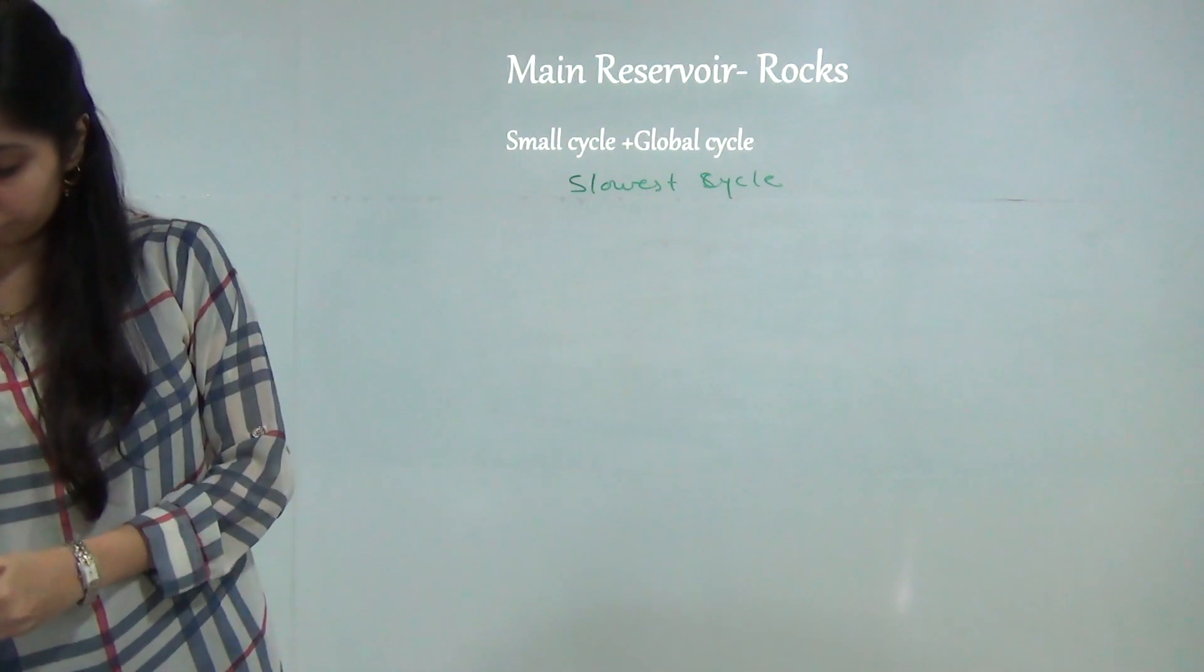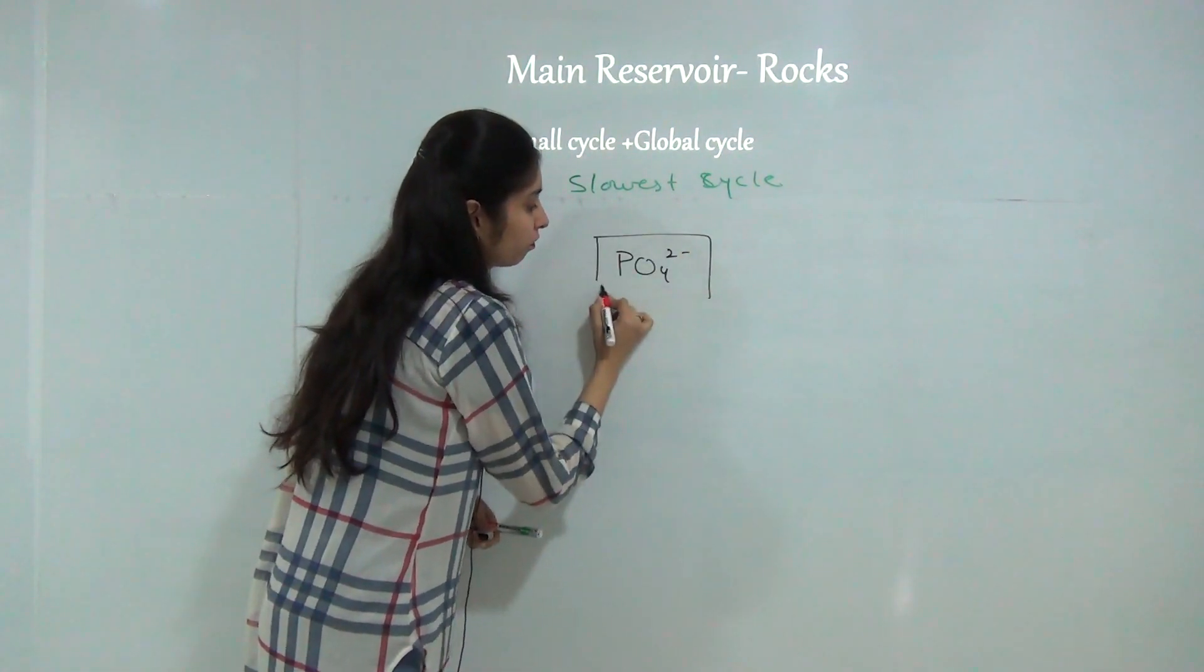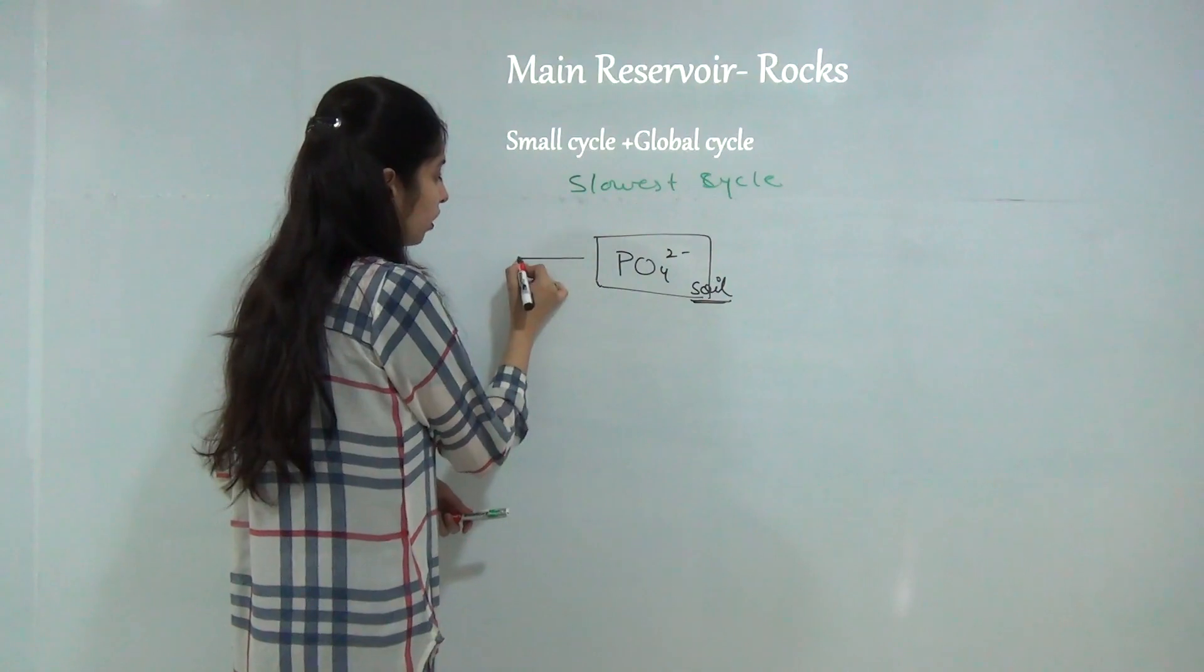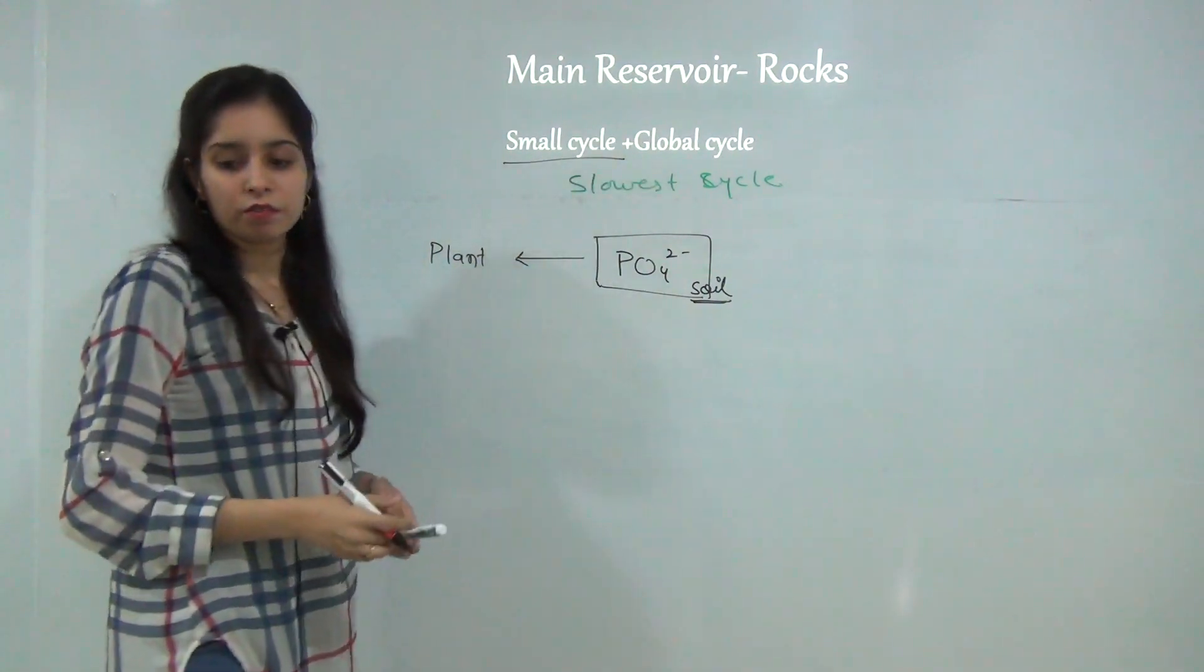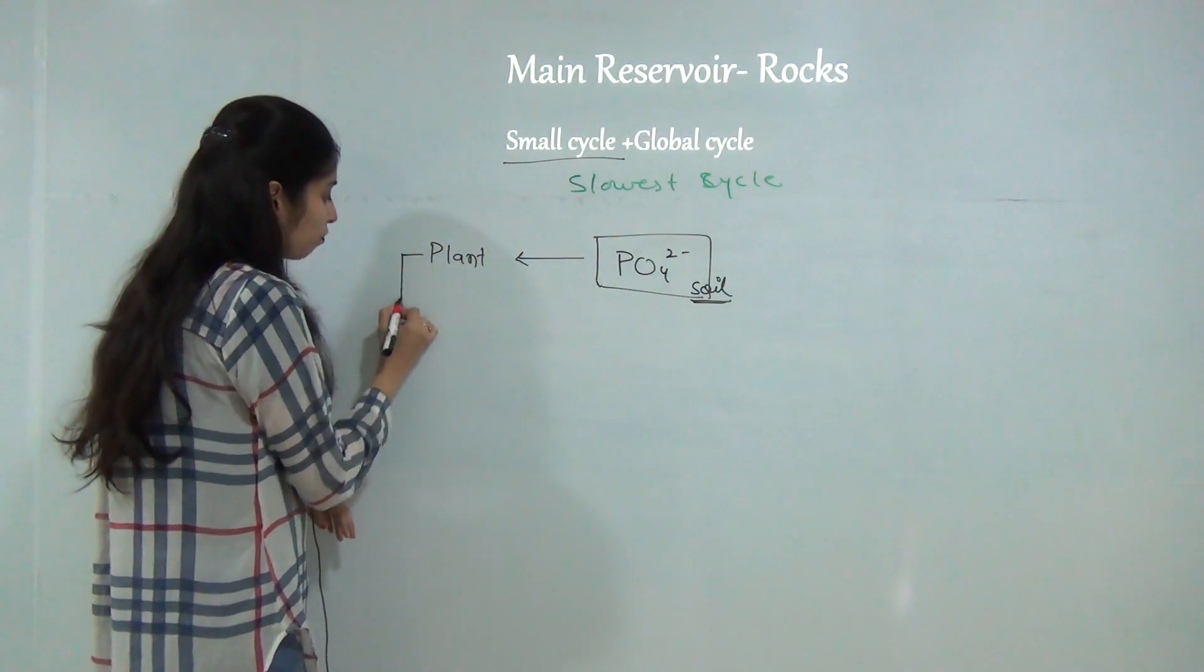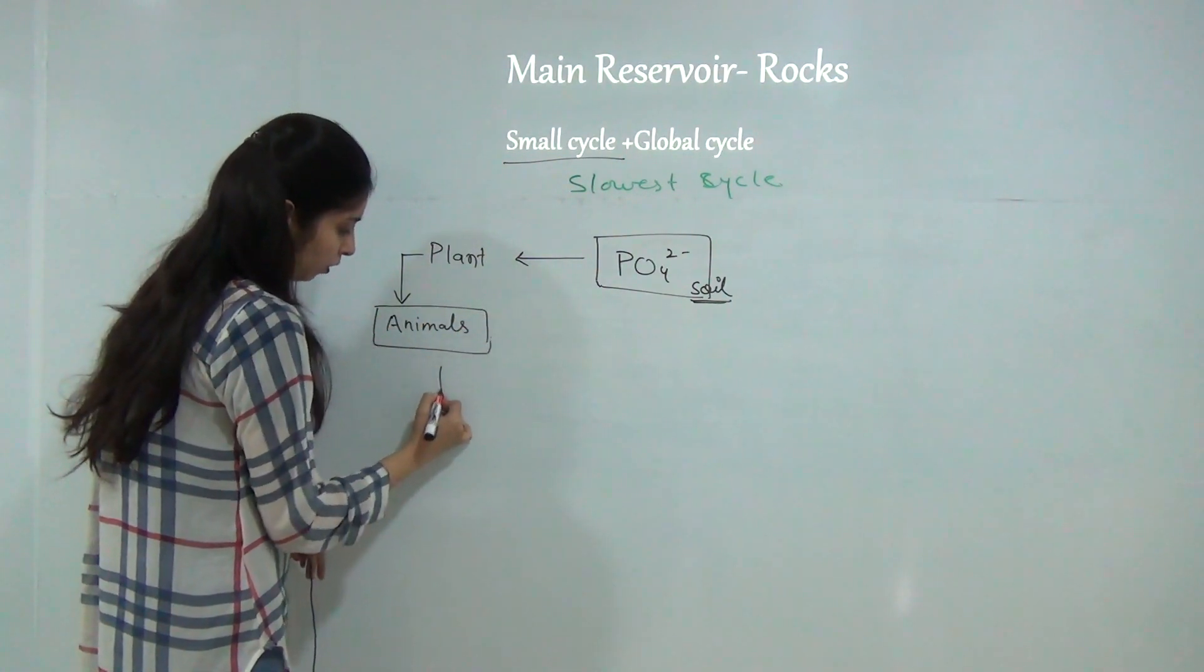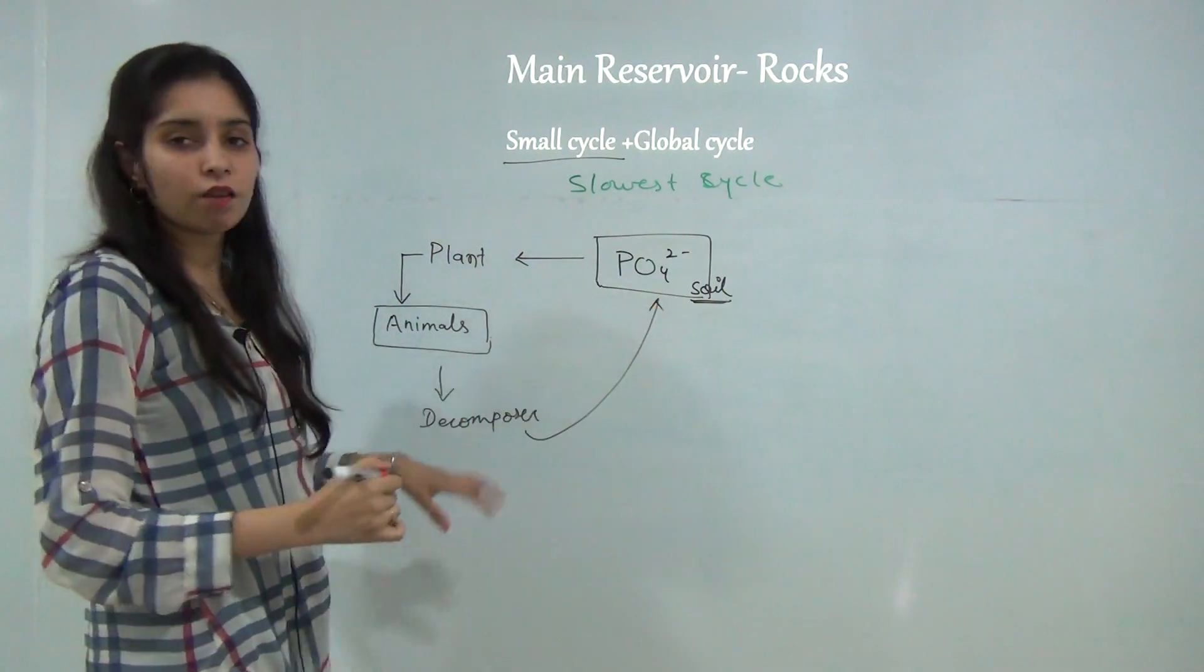At first phosphorus is present in the form of phosphate which is the nutrient for the growth of plants when it is present in soil. This phosphate is consumed by the producers which are plants, which is the main nutrient for growth of plants. Then this is transferred to the animals or consumers, and by the decomposers it decomposes into the soil again. This is the small cycle of phosphorus cycle.